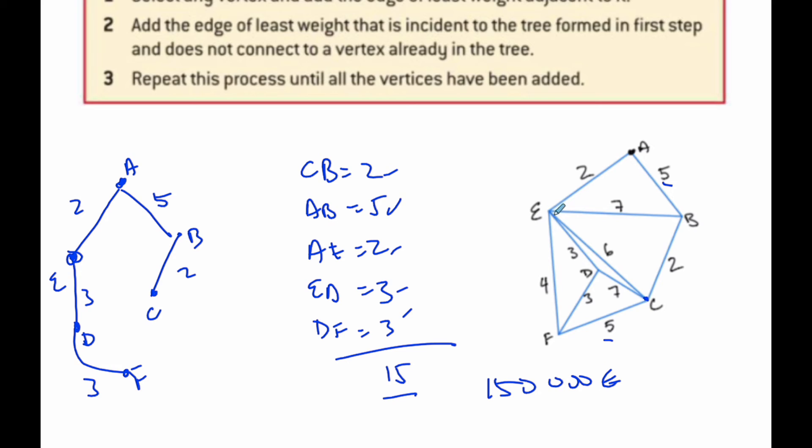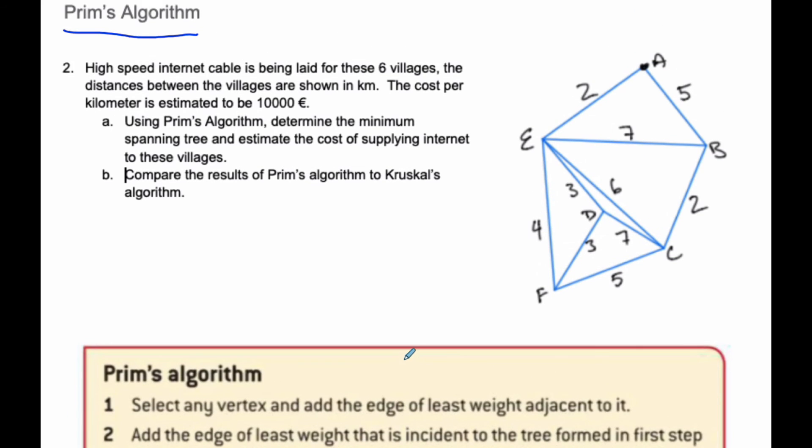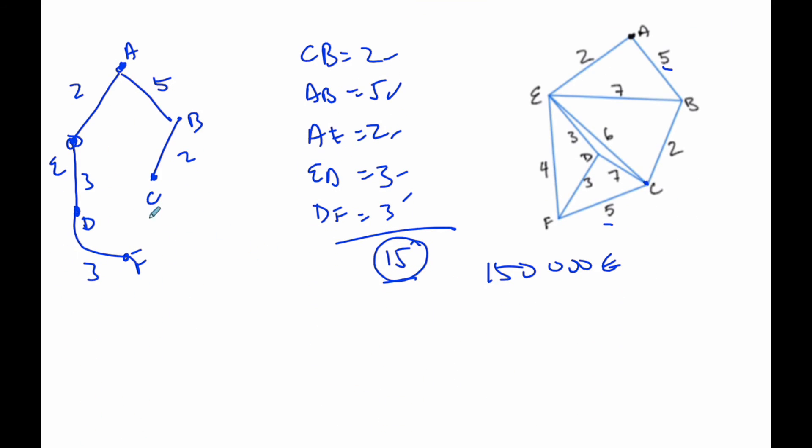Now, if I would have started at E, it would have been slightly different. But it would have been the same minimum weight at the end. And so I would like to compare these now to Kruskal's algorithm. So here is my spanning tree from C all the way to F.